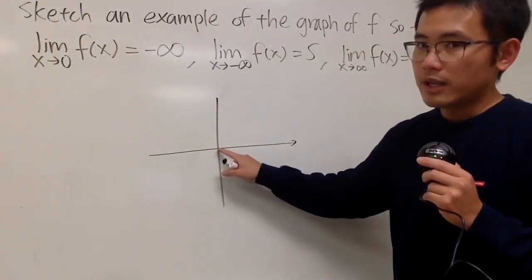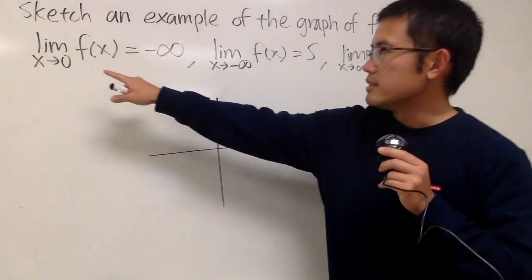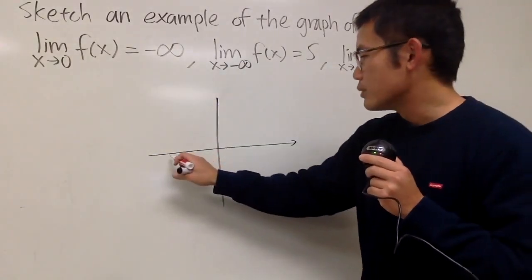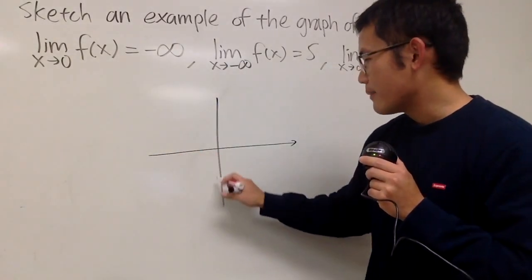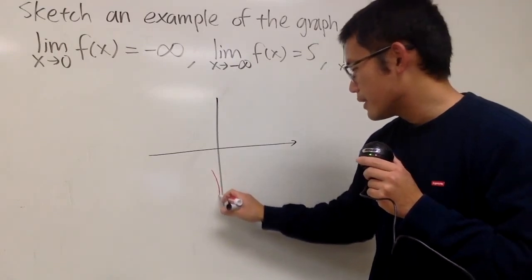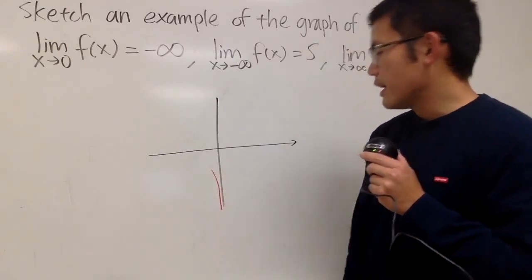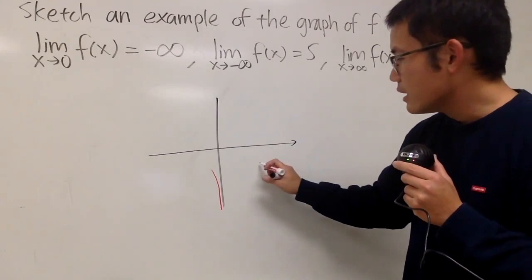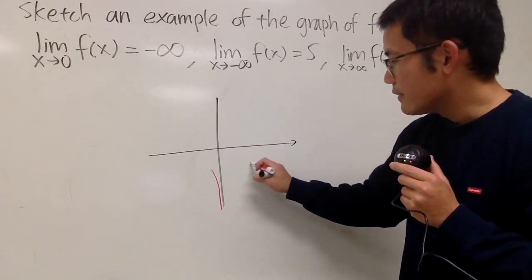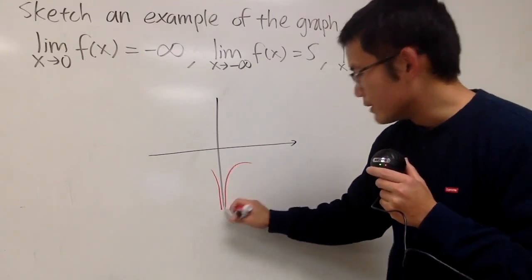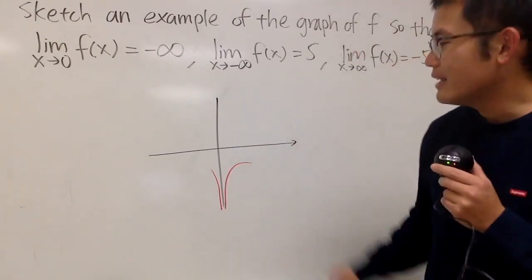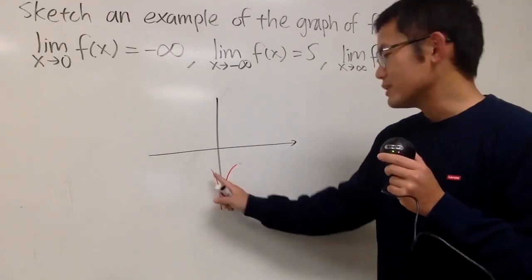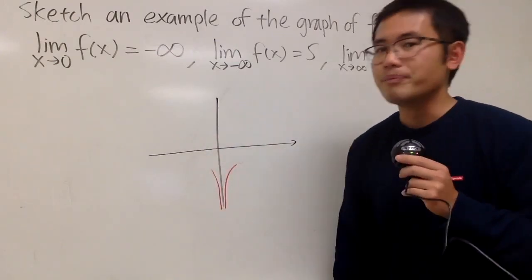Here is of course when x is equal to zero. When x is approaching zero from the left-hand side, the graph has to go straight down — it looks like this. Similarly, when you are going towards zero from the right-hand side, the function will go like this. So it must be this kind of situation. You can extend it, but that's up to you.